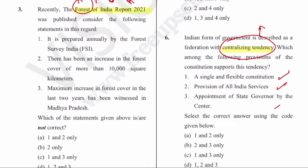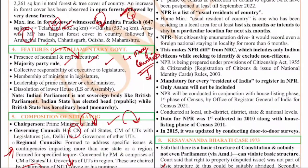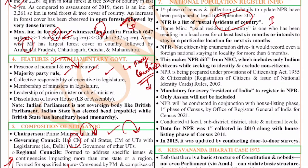The seventh question is on the National Population Register. In the last couple of years, NRC and NPR have been in the news. The National Population Register is done along with the census. The main aim is to make a list of people residing in the country - the usual residents of the country. It includes both Indian citizens as well as foreign citizens. But foreigners who have been in this country for a minimum of six months only are included in the National Population Register.